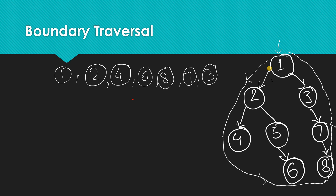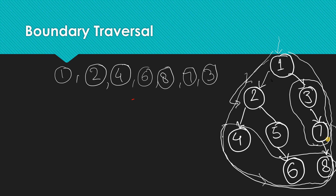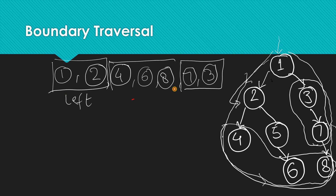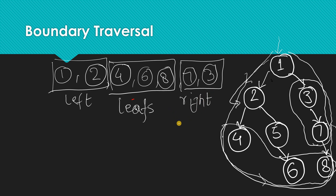We can segregate this problem into three parts: first, print the left elements of the binary tree; second, print the leaves; and third, print the right elements in reverse order — starting from the bottom going up. These are the left elements, these are the leaves, and this is the right side of the binary tree in reverse.